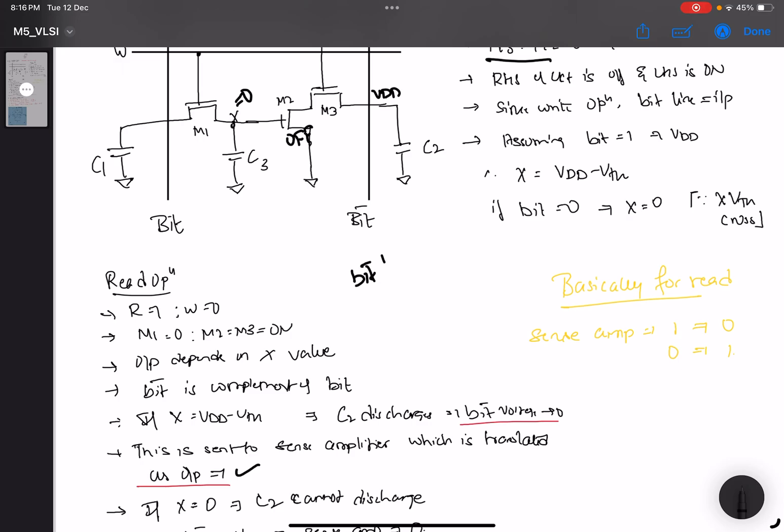So therefore, bit bar remains high and implies sense amplifier does not sense that the bit bar voltage is decreasing. And therefore it says that the output is 0.